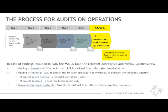In case of findings included in the final audit report, the MAJS takes the relevant corrective and follow-up measures. If the finding is formal, the MAJS checks that the lead partner, project partner, and national controller take remedial action. If the finding is financial, the MAJS launches the relevant procedure to withdraw or recover the ineligible amount. If the project is still running, a financial correction is done in the next project payment. If the project is closed, a recovery letter is sent out. If the financial finding is systemic, the MAJS asks the national controller to take corrective measures and check additional reports for errors.